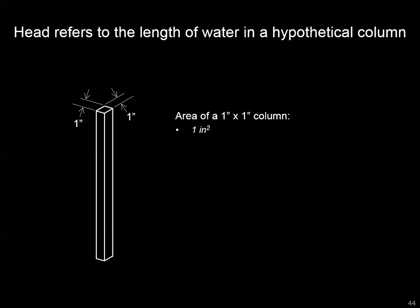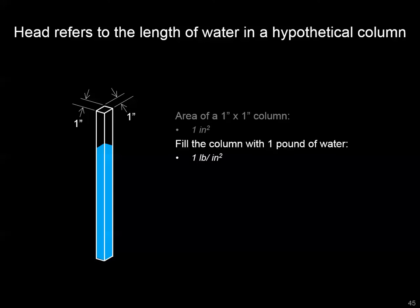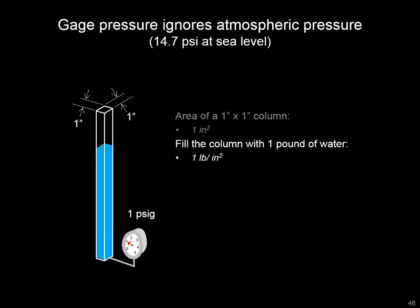Head, in this context, refers to a water hydraulic pressure. For a thought experiment: imagine you're in your garage with a glass column that's a perfect square of one inch by one inch on each side — a cross-sectional area of one square inch. You measure out a perfect pound of water and dump it into this glass column. If you put a gauge at the bottom, you should read one pound per square inch of gauge pressure.